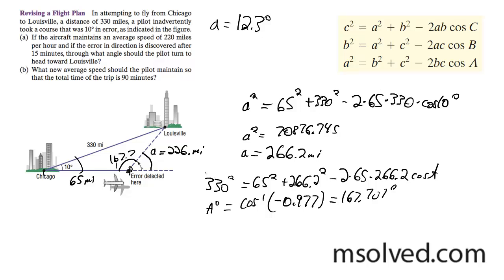Now for part B, they want to know what the average speed should be for the pilot to maintain. So the time is 90 minutes from Chicago to Louisville, despite the correction that had to be made. So what we have to do for that is we have to add 65 and 266.2 miles.